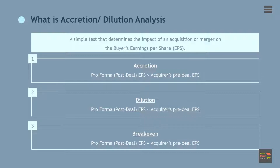Break-even. This scenario is pretty self-explanatory. Upon a merger or acquisition, the acquiring company would essentially break even. In other words, there would be no impact on the acquirer's EPS, and the company's EPS would be the same before and after the deal is made.